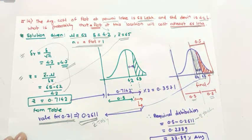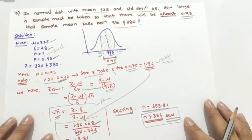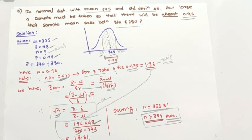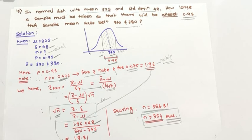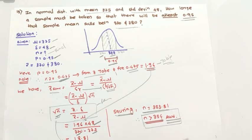So friends, 23.89 percent is the probability that a flat will cost more than 65 lakh. This is the video covering the unsolved examples from the Macmillan book. Thank you for watching — please subscribe and share with your friends so they can benefit too.